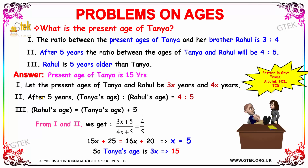From facts 1 and 2, we write: Tanya's present age is 3x, so after 5 years it becomes 3x + 5. Rahul's present age is 4x, so after 5 years it becomes 4x + 5. The ratio after 5 years is 4 to 5. So our equation is (3x + 5) / (4x + 5) = 4 / 5.